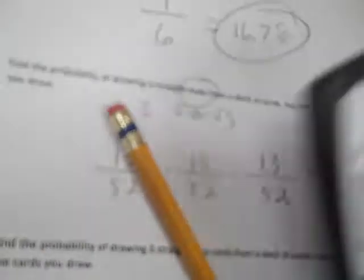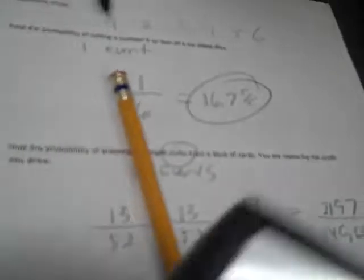Now if we want to draw clubs, well here's clubs, 13. But I'm replacing what I draw, so it's always 13. It does not go 13, 12, 11 if you're replacing it. So 13 to the third power if you want. So 2197, and then 52 to the third is 140,608. So dividing times 100. Okay, 1.6%.